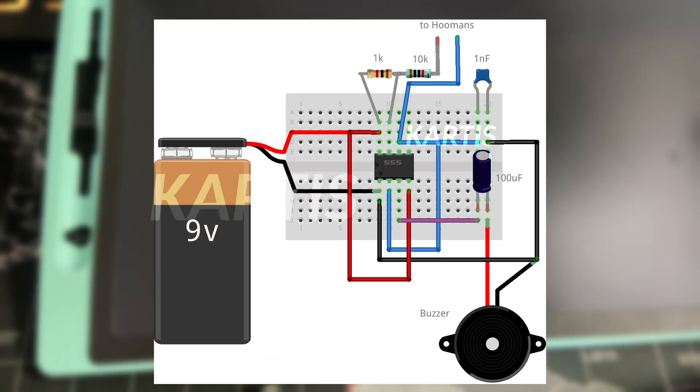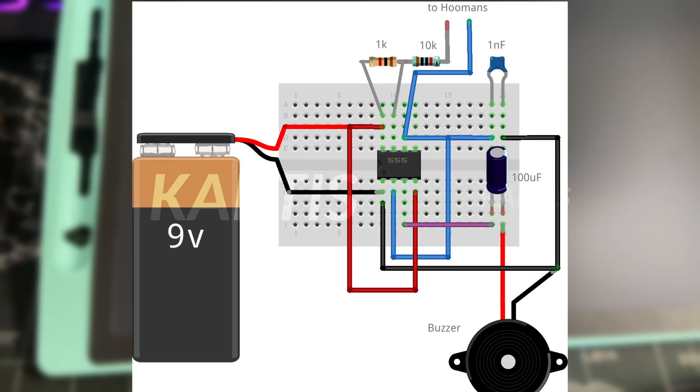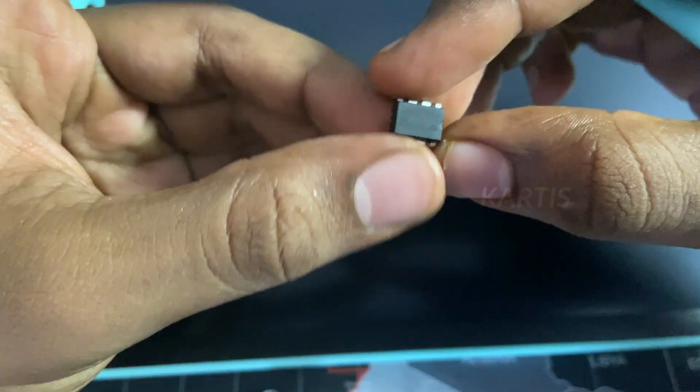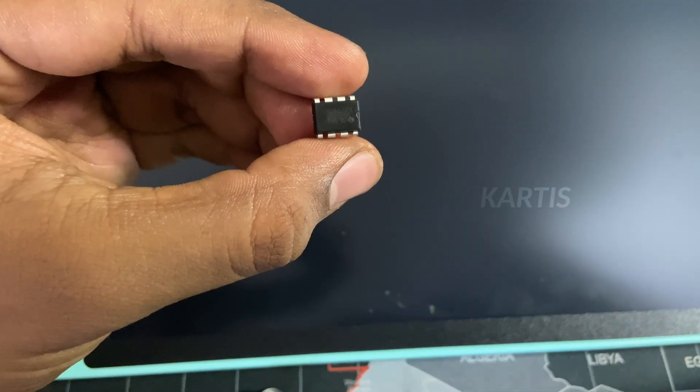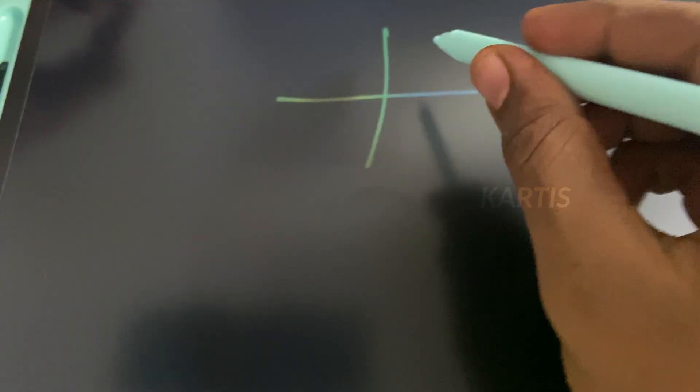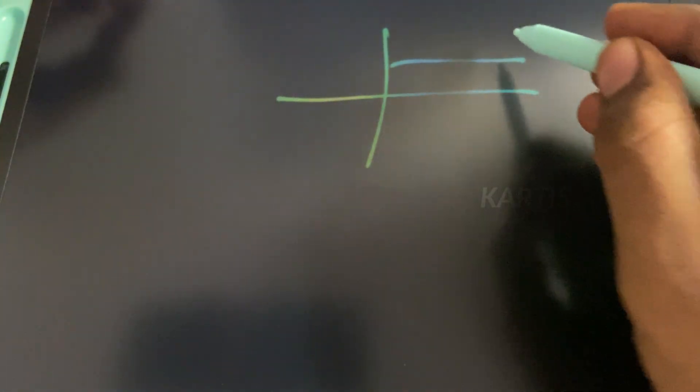This is the circuit diagram. We use the IC in the center. This is a timer IC. There are actually 3 states of operation. We are going to use the astable mode. We can take a DC signal and convert it to a pulsing DC signal.